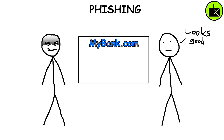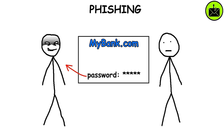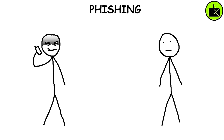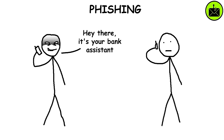Once the victim logs in using their password, it gets sent to the attacker. Phishing can also be perpetrated through phone calls, where the attacker spoofs their number to appear as if it is coming from a legitimate institution, or through SMS.